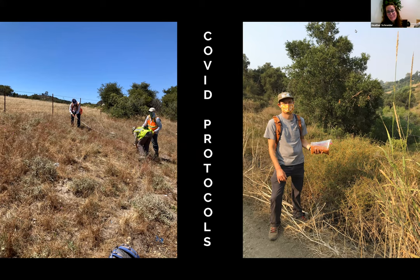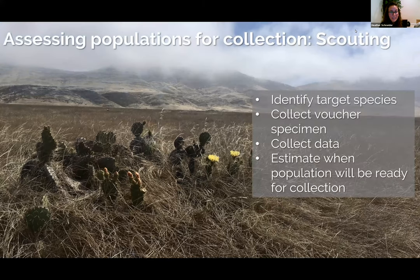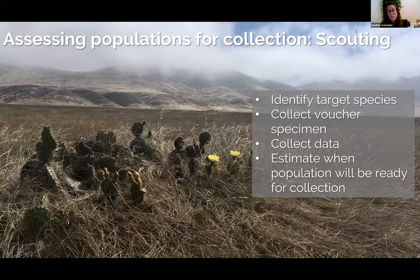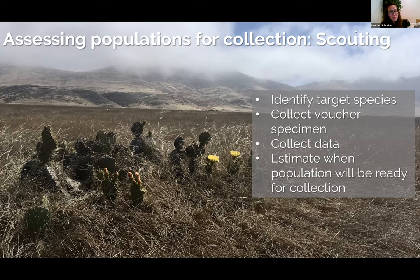Once we have everything lined up, the first step in the field — and often my favorite — is the scouting trips. We try to hit things when they're in peak bloom; it's easier to find and identify most plants when they're flowering. We make sure we have the right target — a lot of rare plants can look like a common relative. One of the ways we verify is by collecting a voucher specimen: we take a sample of a plant, press it, dry it, and put it in the herbarium, which is just a library of pressed plants. That's our proof we collected what we said we did.